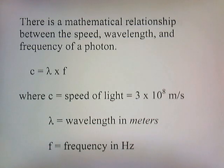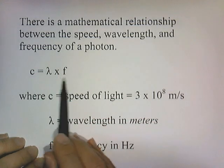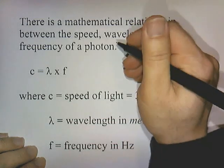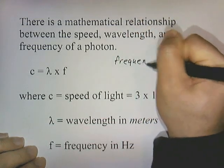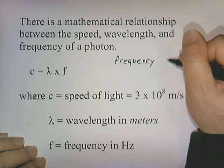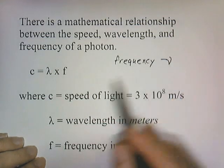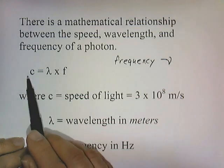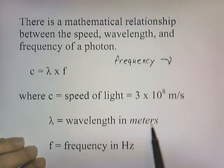There's a mathematical relationship between speed, wavelength, and frequency of a photon: C equals lambda times frequency. Some chemistry books use the Greek letter nu for frequency instead of F, but we're going to use F. C is the speed of light, lambda is wavelength in meters, and F is frequency in hertz.